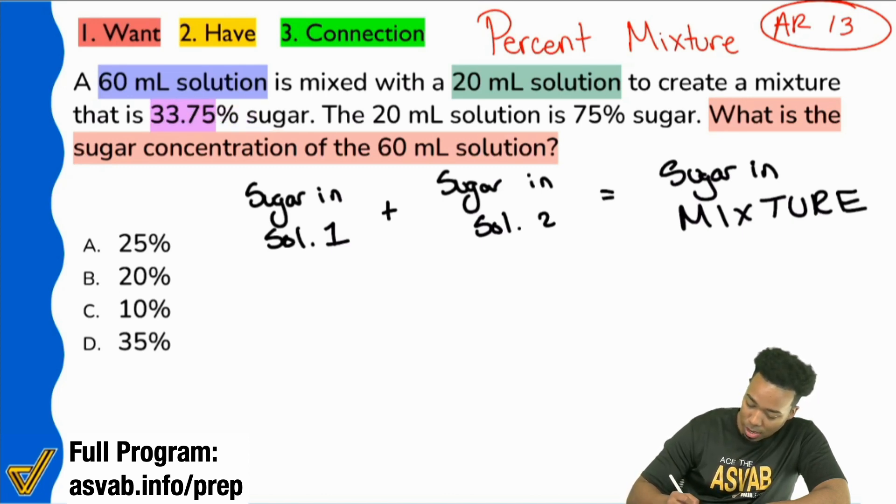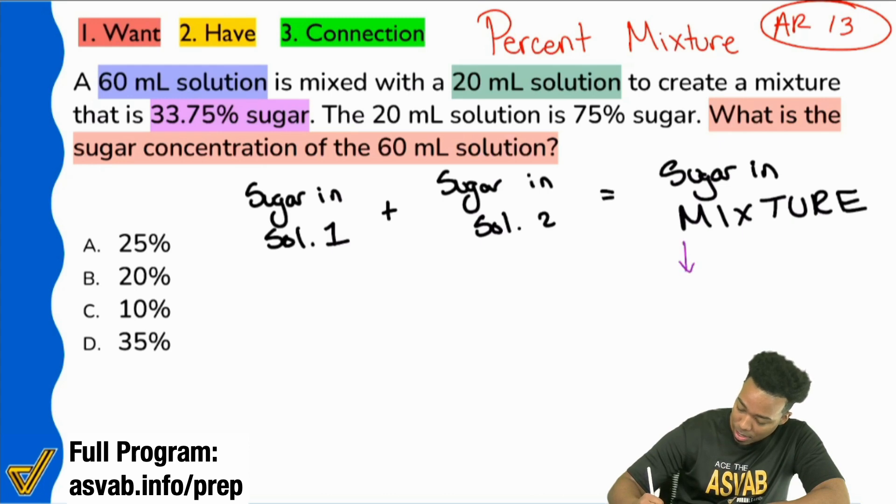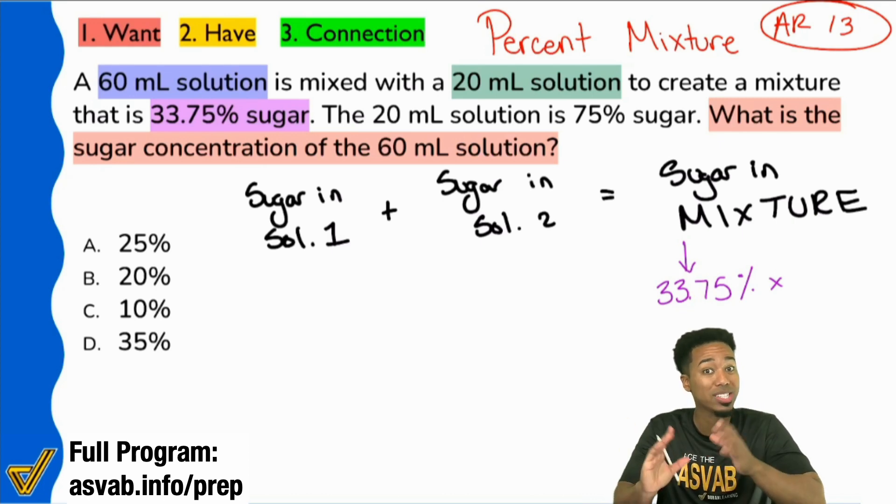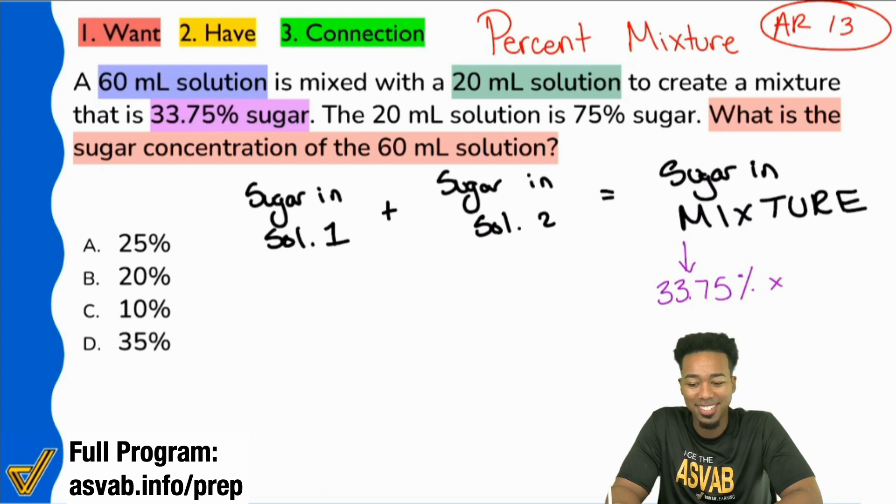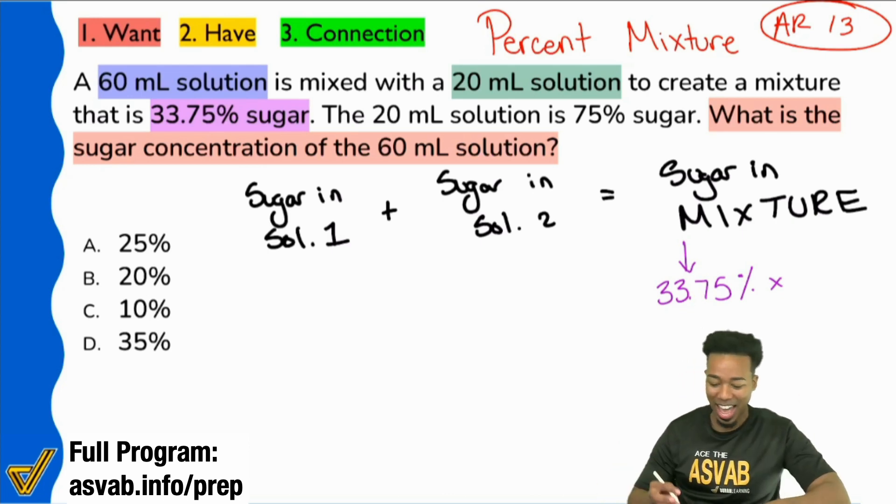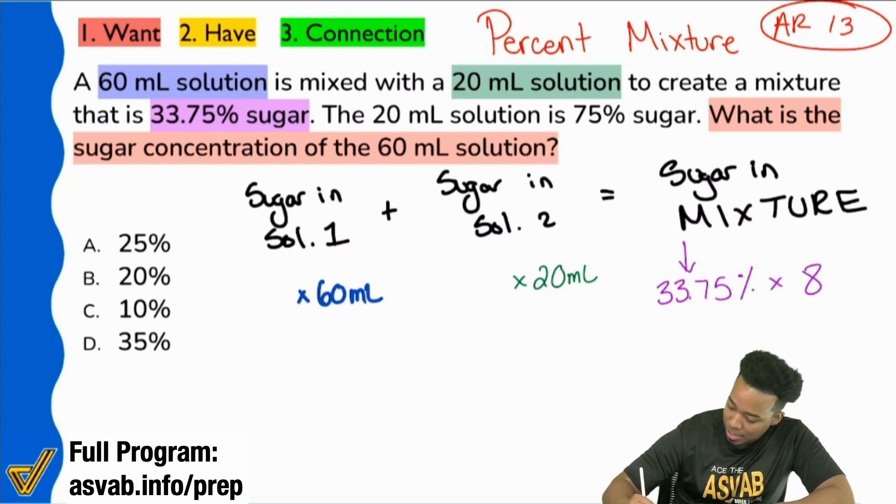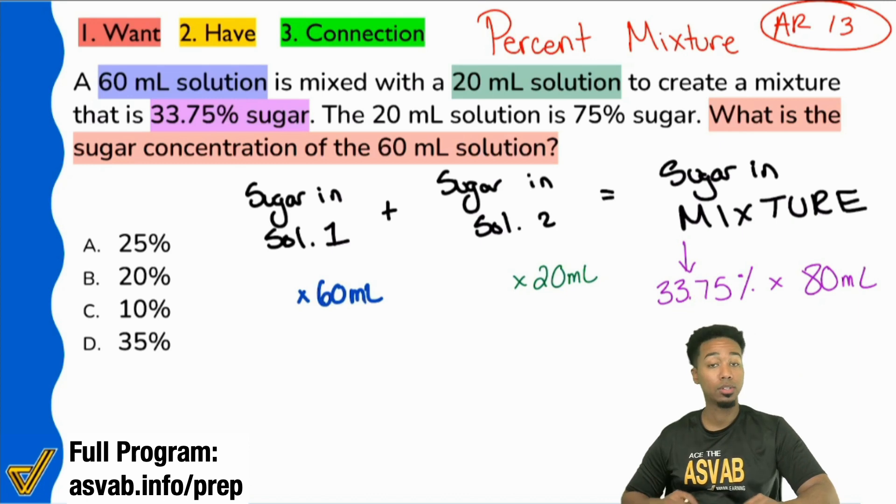So what this is telling us is the information is not in the same order. You got to be a little more careful. We have a 60 milliliter solution, and we have a 20 milliliter solution. Let's highlight these differently. So when you read this, you have solution one, solution two, and then you create a mixture, and that mixture is 33.75% sugar. So my party people, this right here, this is the percent of the mixture.